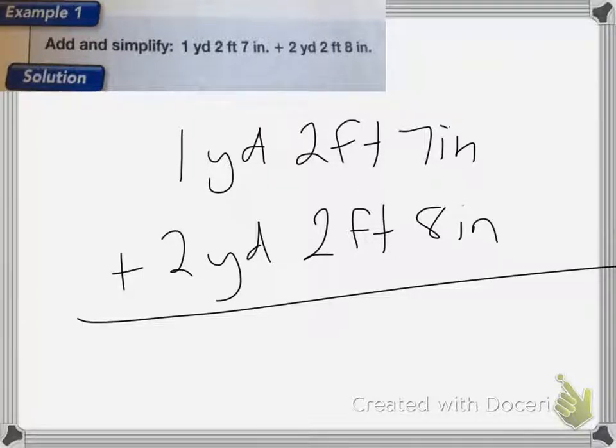So 7 plus 8 is 18 inches, or 15 inches, excuse me. 2 feet plus 2 feet is 4 feet. And then 1 yard plus 2 yards is 3 yards.